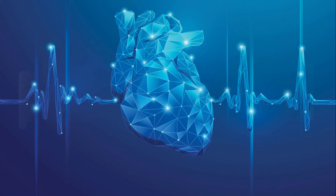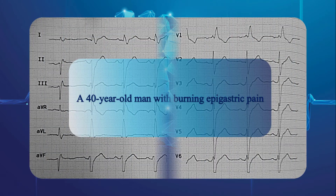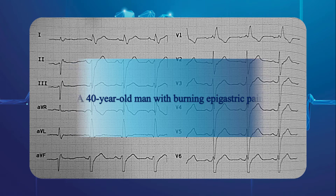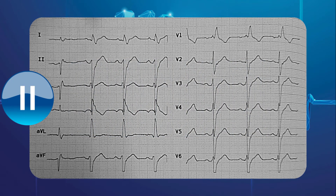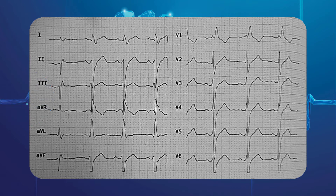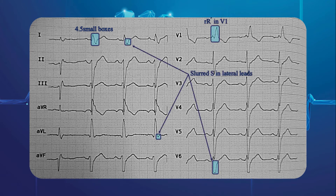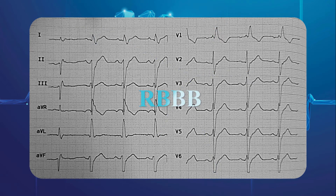Our second strip is taken from a 40-year-old man with burning epigastric pain. Again, pause the video and do it yourself, then we go through it together. QRS complexes are obviously broad. Other associated findings are RR prime pattern in V1 and slurred S wave in lateral leads. So the QRS complex changes are owing to RBBB.